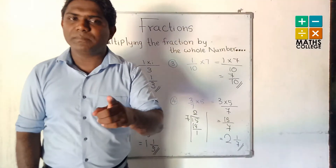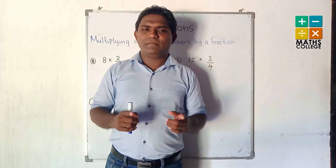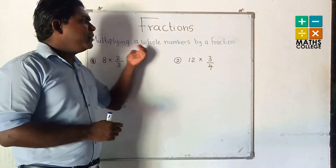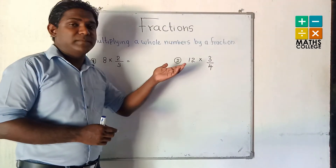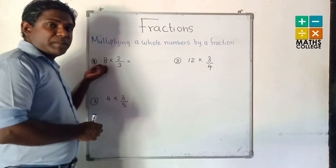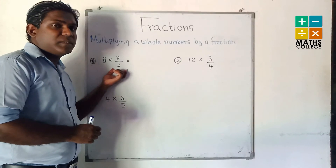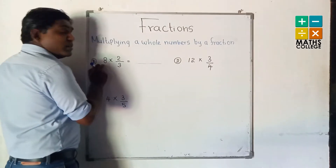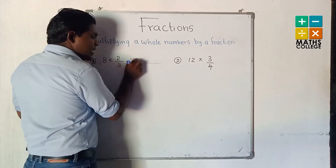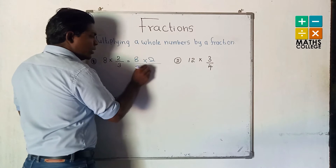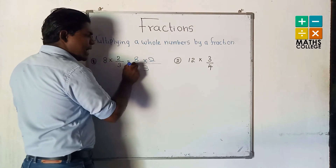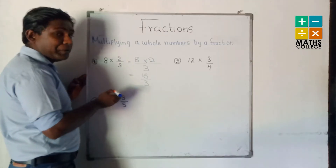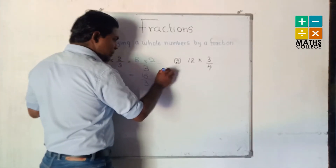Okay, we can go to the next step. What is the next step? Multiplying a whole number by a fraction. Now we have a whole number and we have to multiply it by a fraction — like the previous one, no difference. Multiply the numerators: 8 multiplied by 2 upon 3 gives 16 upon 3. We have an improper fraction, so we must keep it as a mixed number.